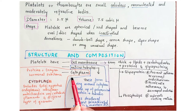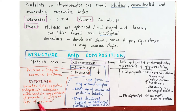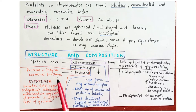The cytoplasm of platelets includes Golgi apparatus, endoplasmic reticulum, mitochondria, microtubules, filaments and different types of granules. Proteins, enzymes and hormonal substances are also present, which are physiologically important and have particular functions.